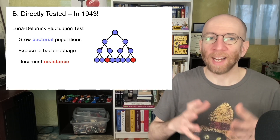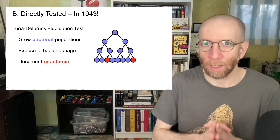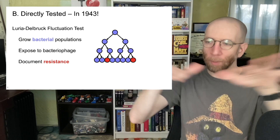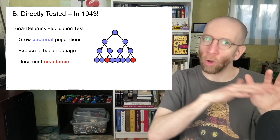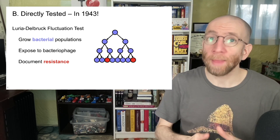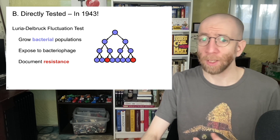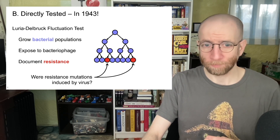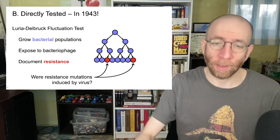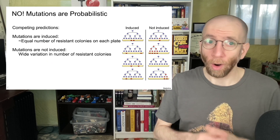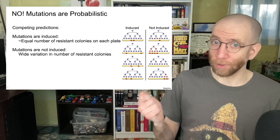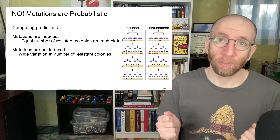In this experiment, the researchers grew bacterial populations — shown in light purple in this figure — diverging them from each other. You start with a common ancestor and end up with a bunch of different bacterial populations. You expose all of those descendant populations to bacteriophages, viruses that infect the bacteria, and then document the frequency of resistance in those populations. The question is: were the resistance mutations induced by the virus? The two possible explanations — induced mutations and not induced — lead to very different, opposite, specific predictions.